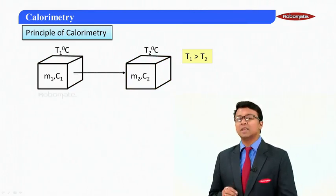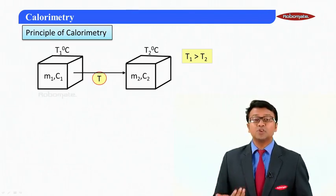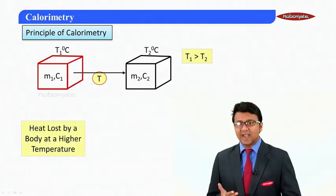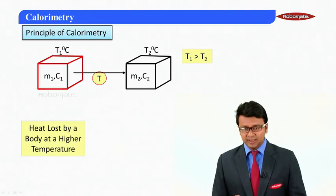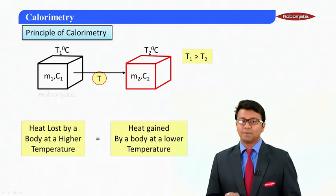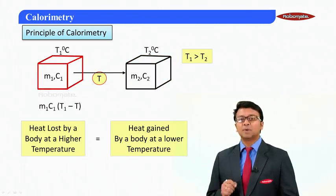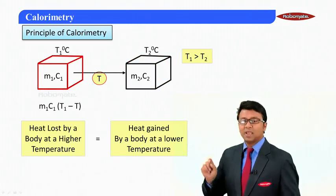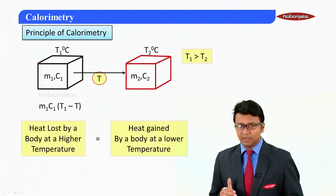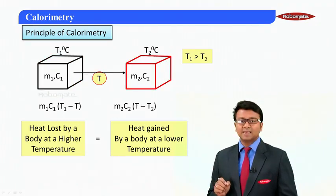After some time, thermal equilibrium is reached where the temperature of both bodies becomes equal to T. The principle of calorimetry states that heat lost by the body at higher temperature equals the heat gained by the body at lower temperature. Heat lost = m₁c₁(T₁ − T), and heat gained = m₂c₂(T − T₂).